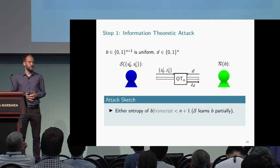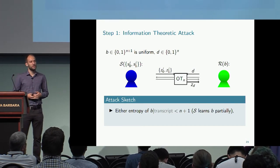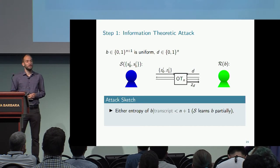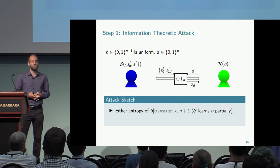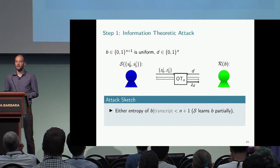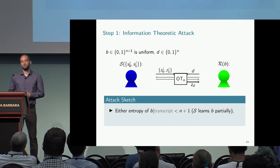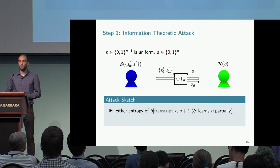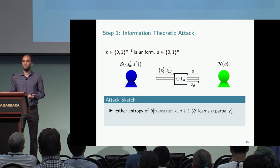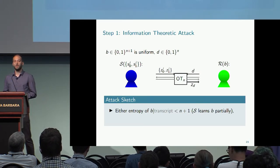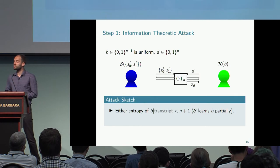If we lose entropy when conditioning on the transcript, that is a bad thing — it means the transcript contains information about the receiver's input. An unbounded sender could exploit this to learn partial information about the receiver's input, which would constitute an attack against the security of the OT extension scheme, since the sender should not learn anything about the receiver's input.